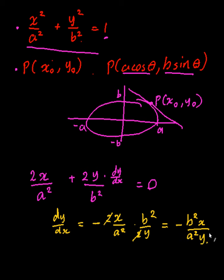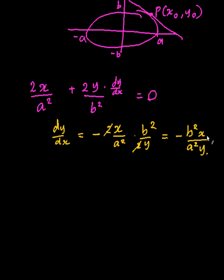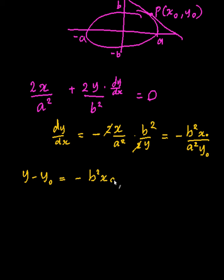So that's our derivative. At the point (x0, y0), we just substitute that in. The equation of the tangent is going to be y minus y0 equals minus b squared x0 on a squared y0, times x minus x0. This is just the point-gradient formula, where that expression is the gradient.